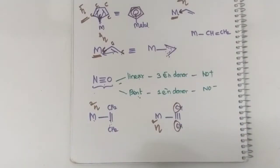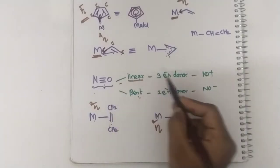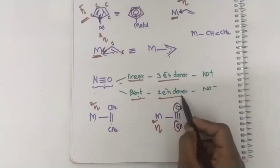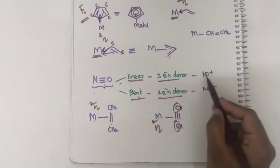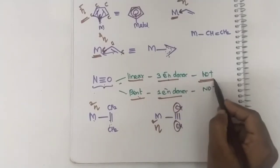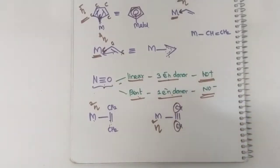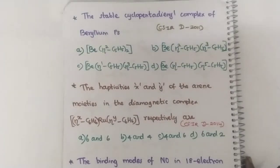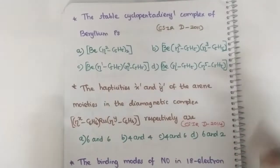So in this case, nitrosyl linear can donate three electrons, bent can donate one electron. Three electrons is represented by NO⁺ and one electron donation is represented by NO⁻. Now let us solve the previous year questions — you will be very clear with the concept if you solve these questions.